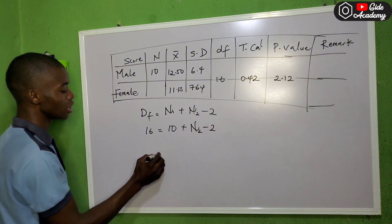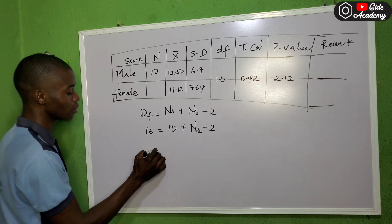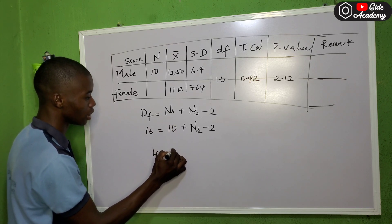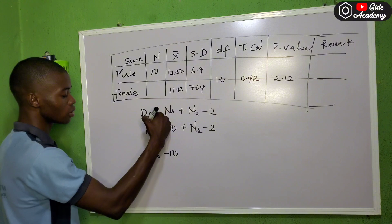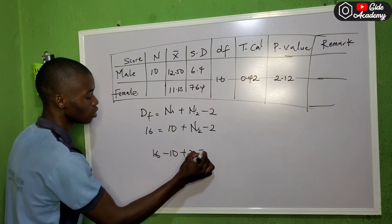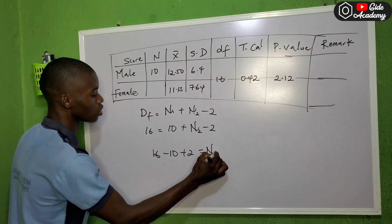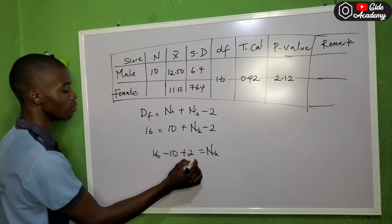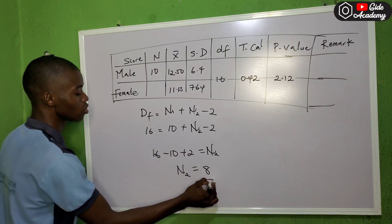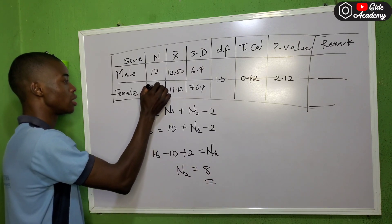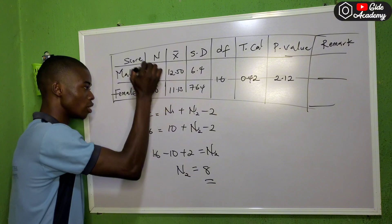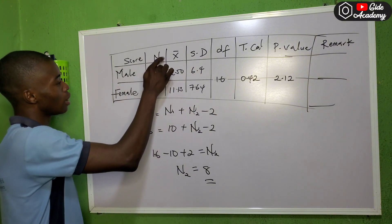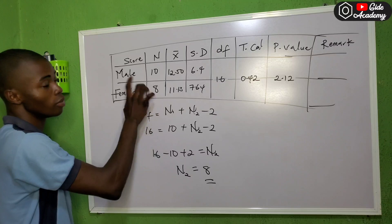So we have 16 = 10 (number of males) + n2 minus 2. Collecting like terms: 16 minus 10 plus 2 = n2, which gives us n2 = 8. So the number of females is 8.